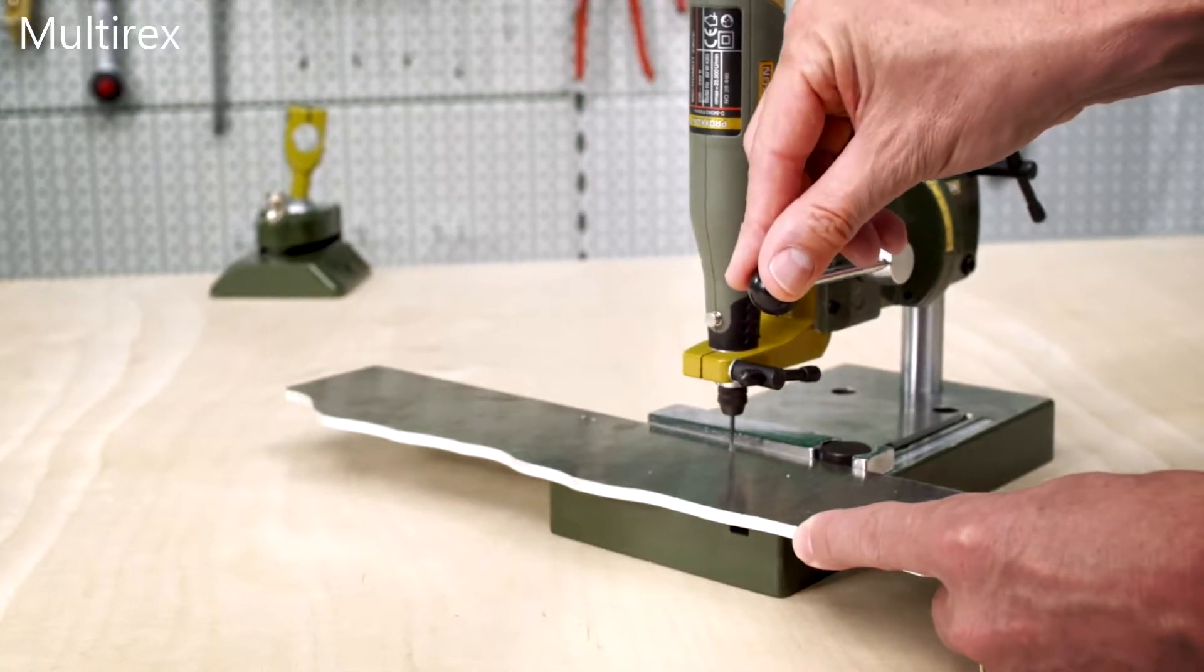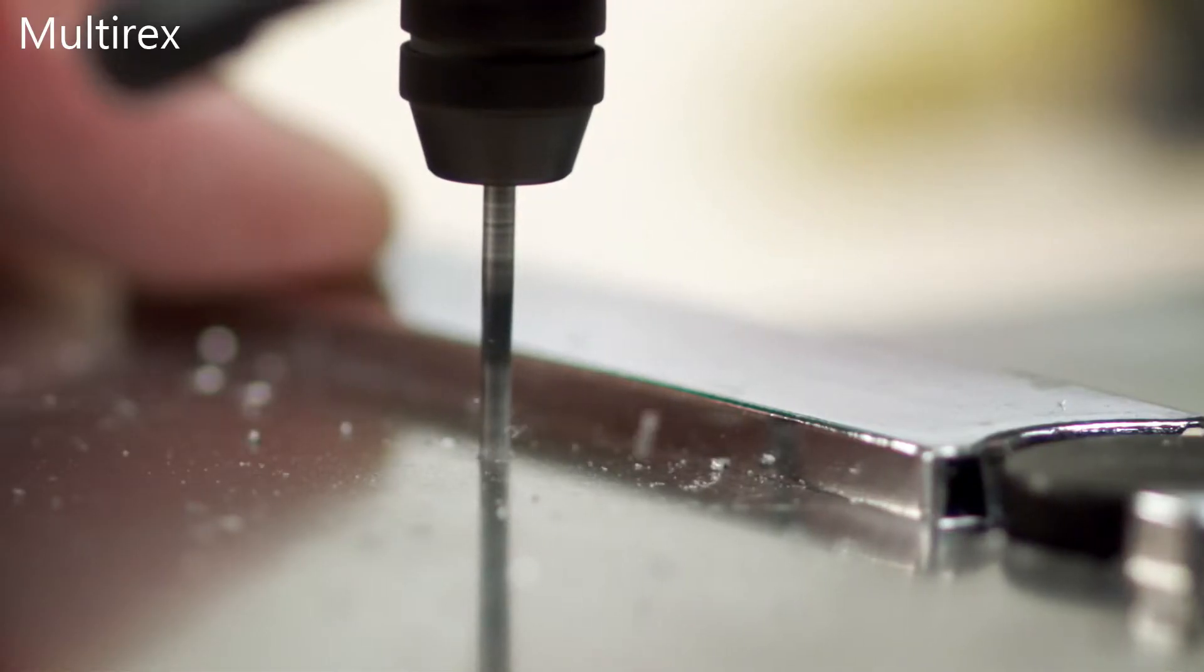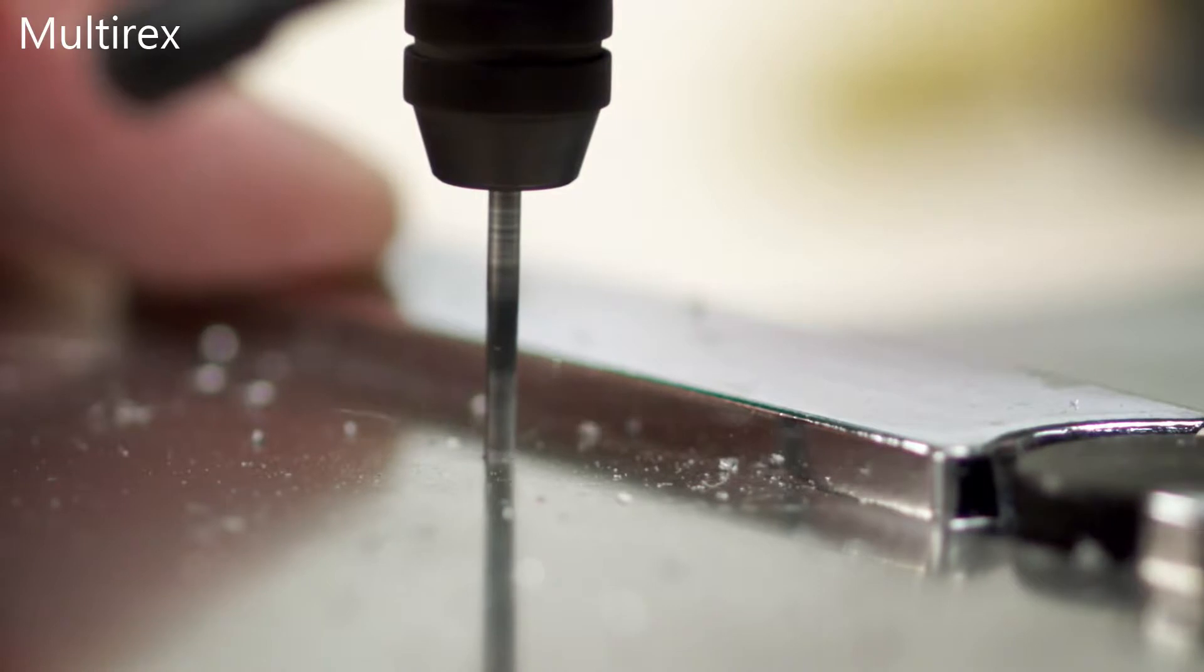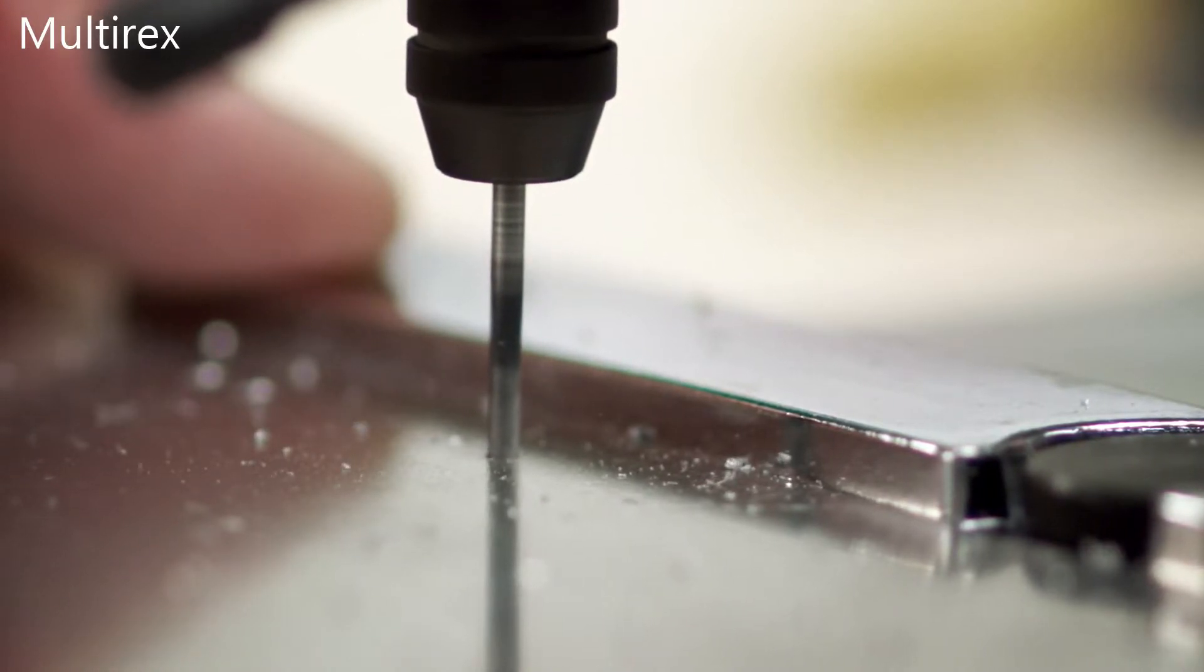With the 20mm collar, the Micromot 230E can be used in our drill stand and in horizontal universal holders.